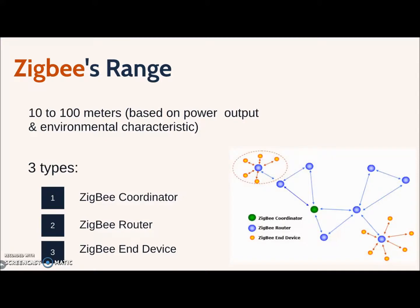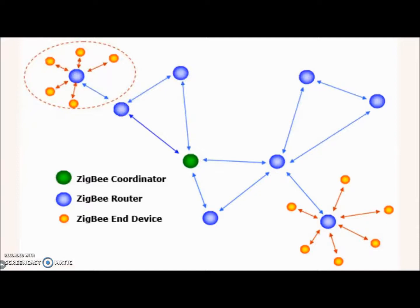This is a simple sample of Zigbee networking. As you can see in the picture, end devices must be connected to a router to join the network and transfer or receive data. As the coordinator is technically similar to other routers, it can be connected to the internet to send and receive information or control. The coordinator forms the root of the network tree and bridges other networks.